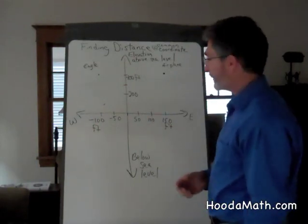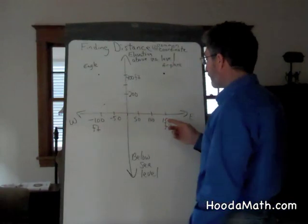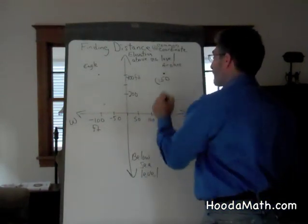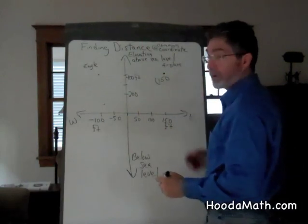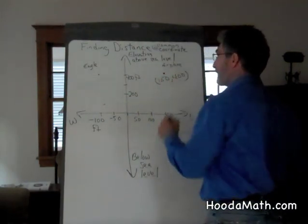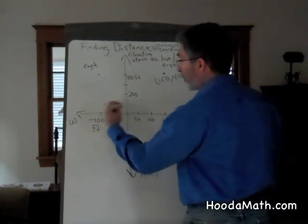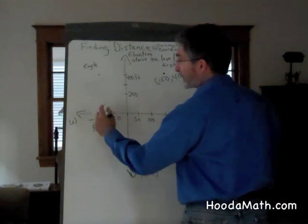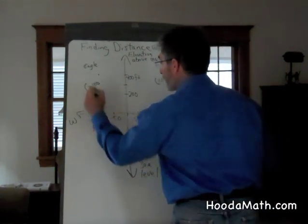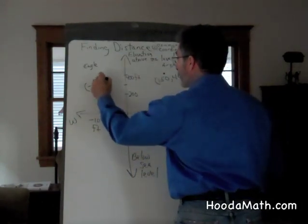First we put the coordinates in. The airplane is 150 feet east of the airport and 400 feet above sea level. The eagle is 100 feet west of the airport — and west we're going to say is negative — and 400 feet above sea level as well.